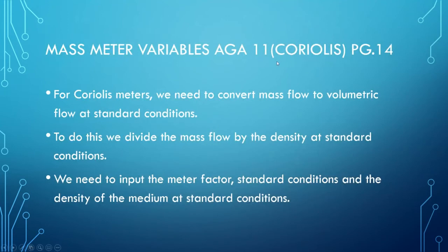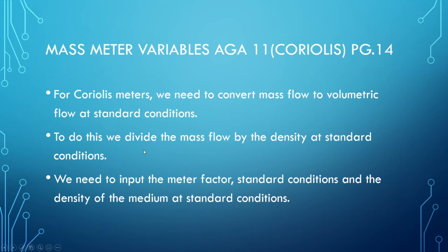AGA11 applies specifically to Coriolis meters. Coriolis meters can do volumetric flow, mass flow, density measurement, and temperature measurement. To use a Coriolis meter, we need to convert mass flow into volumetric flow at standard conditions by dividing mass flow by density. We also need to input the meter factor, the standard conditions, and the density of the medium at standard conditions.